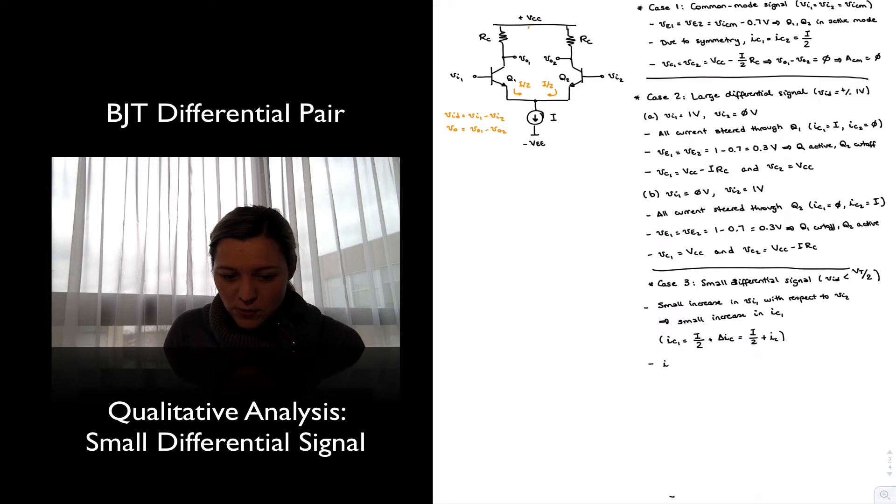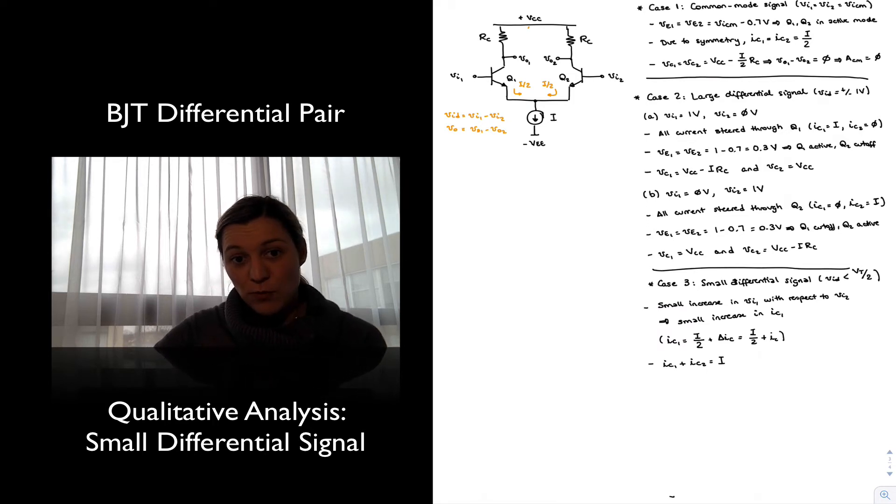Now, since we know that I_C1 plus I_C2 must be equal to I, because of the law of conservation of charge and the law of conservation of matter, we will have the overall current I, and now we have I/2 through each branch. If the current through one branch increases by a small amount, then the current through the other branch must decrease by the same small amount, so that the overall current remains the same.